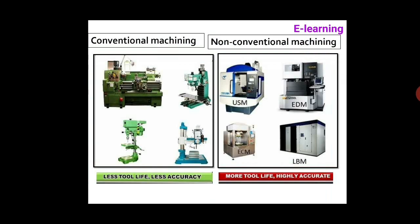In the left-hand side diagram, conventional machining processes are shown, and on the right-hand side, non-conventional machining processes are shown, which include USM, EDM, ECM, and LBM.